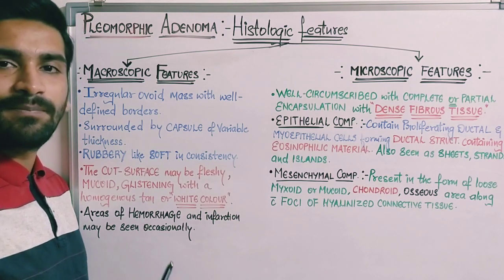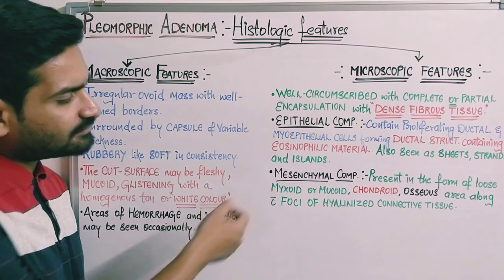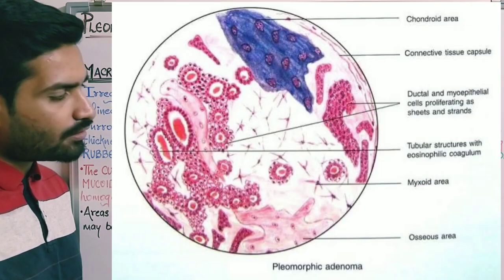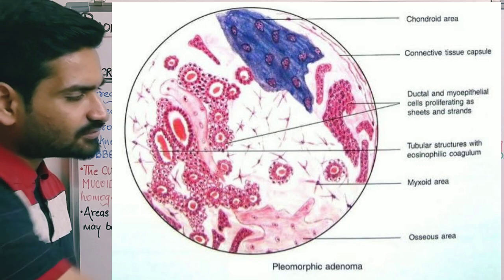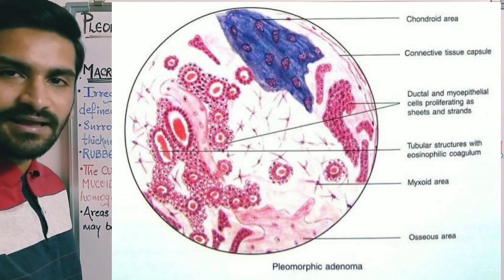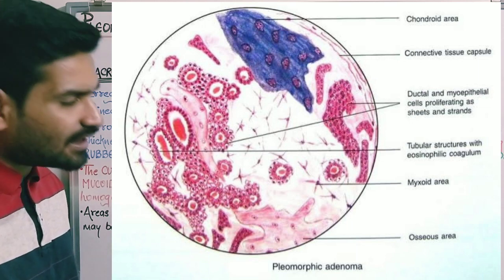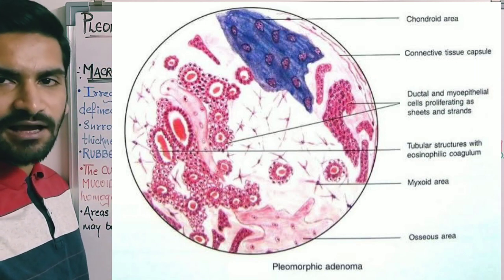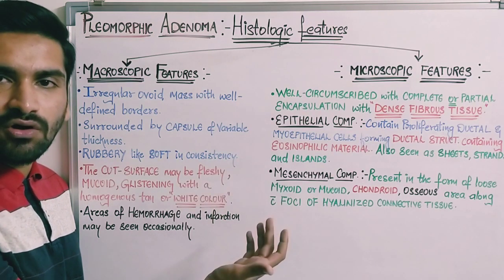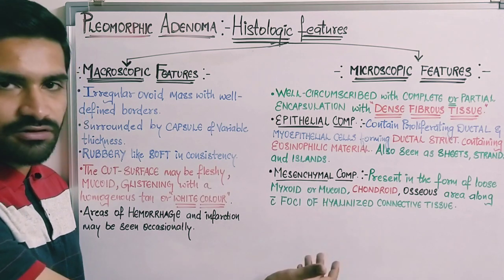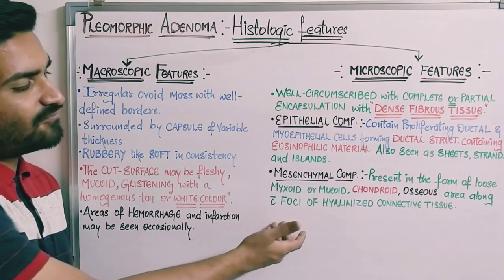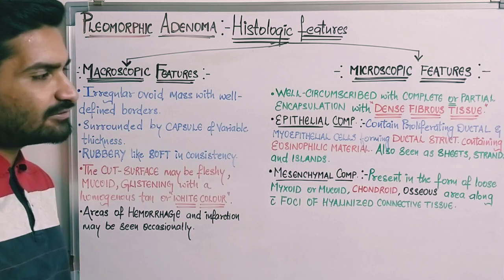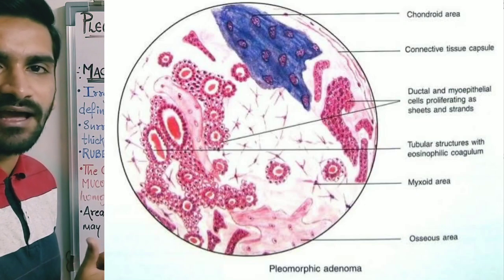Regarding the mesenchymal component, it is present in the form of loose myxoid or mucoid material, chondroid, or osseous component — or all three can be present along with the epithelial component. Foci of hyalinized connective tissue will also be seen. This creates a complex intermingling of epithelial and mesenchymal components.